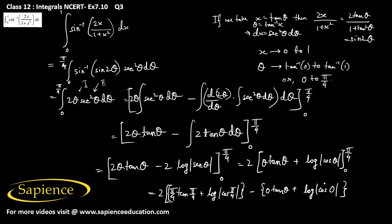Now, cos 0 = 1 and log 1 = 0, so that part is 0. Also tan 0 = 0, so the entire lower-limit term is 0. The final answer comes from 2 into (π/4 · tan(π/4) + log|cos(π/4)|), where tan(π/4) = 1.